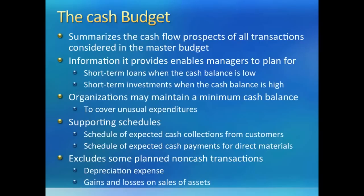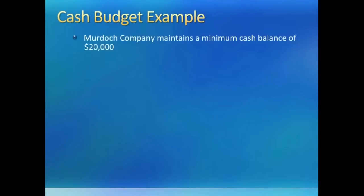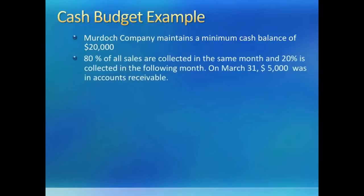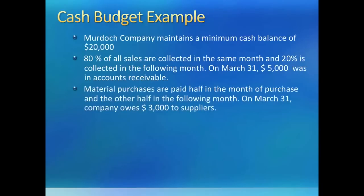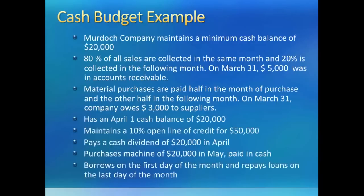Let's look at Murdoch's cash situation. Murdoch has a policy of keeping a minimum of $20,000 in cash per emergency. It allows one month credit on 20% of its sales and collects 80% in the month of sale. It has a one-month credit line from its suppliers for 50% of direct material purchases, so it pays half in the month of purchase and the other half next month. We are also given beginning balances for cash, accounts receivable, accounts payable, etc. The company borrows at 10% from the bank. During the quarter, it paid dividends and bought machinery worth $20,000.